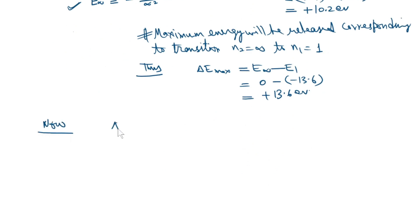Now delta E min to delta E max equals 10.2 electron volts upon 13.6 electron volts. These two numbers are multiples of 3.4, and this equals 0.75.